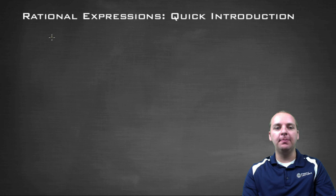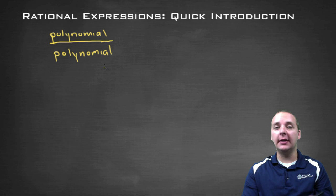Basically a rational expression is when you have one polynomial divided by another polynomial. The degree doesn't matter, how many terms it has doesn't matter, none of that matters. It's just when you have a polynomial divided by another polynomial.